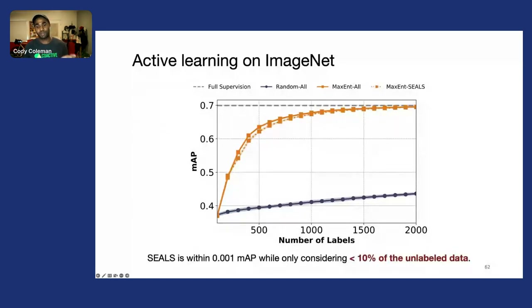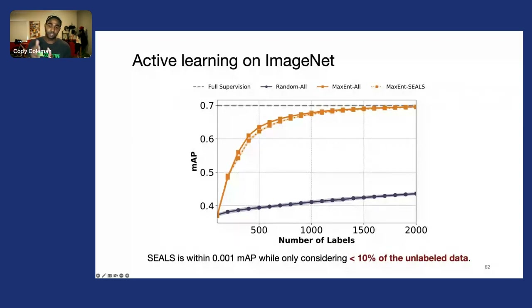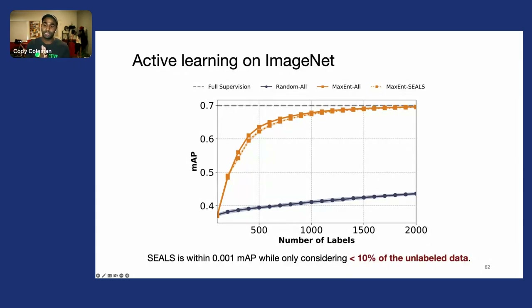But if we apply our SEALS method, we find it achieves a very similar level of mean average precision, while only considering less than 10% of the unlabeled data. This enables a 5x speedup for simple linear approaches like uncertainty sampling and up to a 50x speedup for more complex methods like information density.